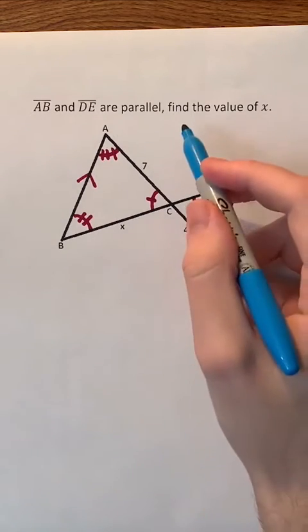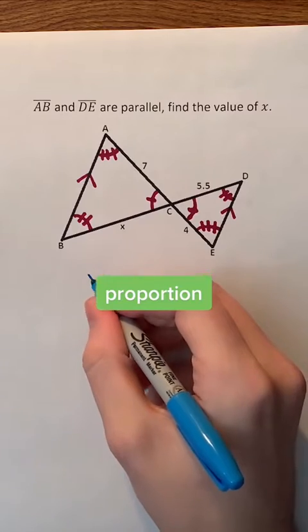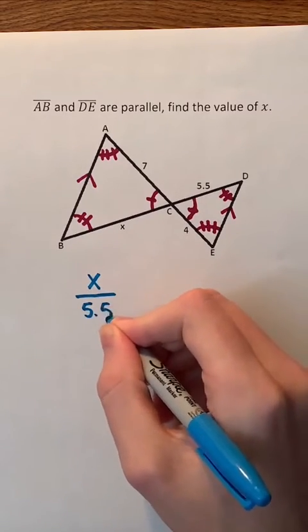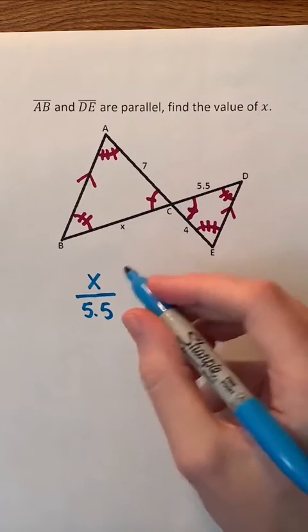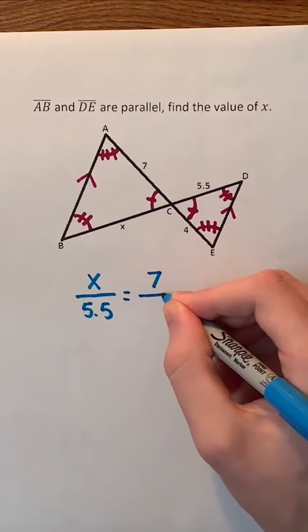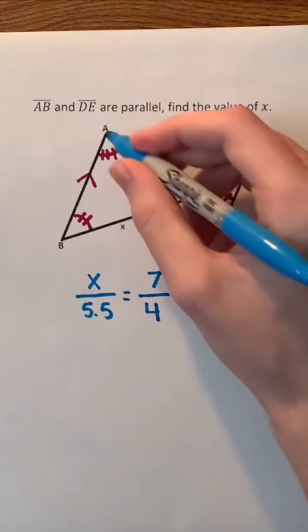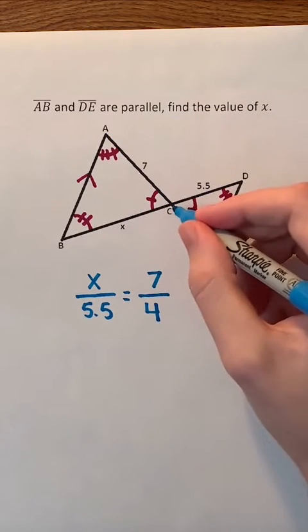Now we can find the value of X by setting up a proportion. We're first going to write X over 5.5 where X is the length of this side and 5.5 is the length of this other side. Then we can set this equal to 7 over 4 where 7 is the length of this side and 4 is the length of this side.